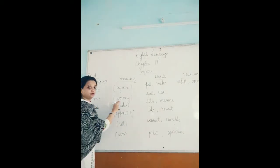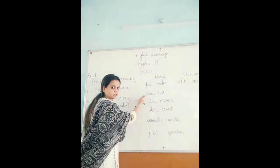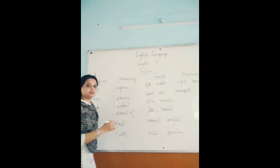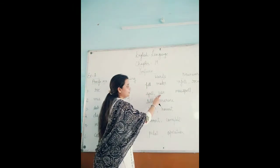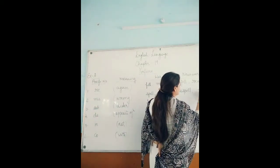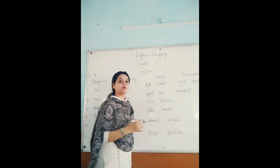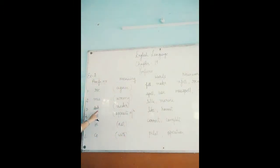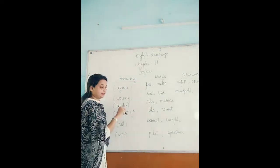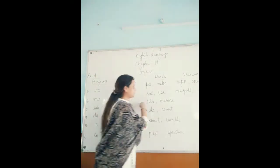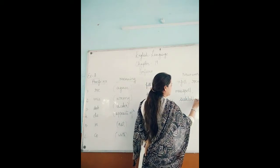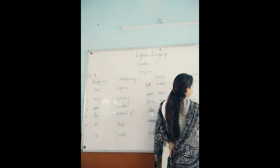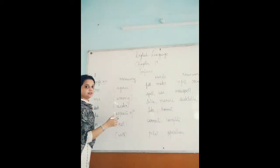Prefix mis means wrong. If we add prefix mis to the base word spell, we get the new word misspell, which means to spell wrongly. Same prefix added to the word use gives misuse, meaning something which is used wrongly. Then we have prefix sub, which means under. If we add this prefix to the base word title, we get subtitle, meaning under the title. And marine gives submarine — something which moves under the ocean.